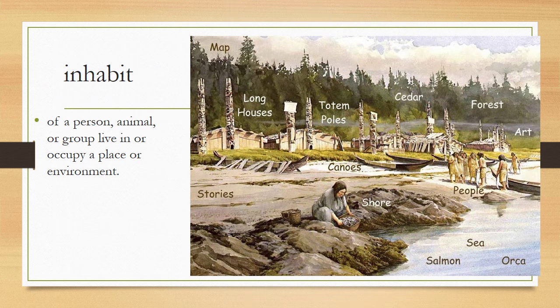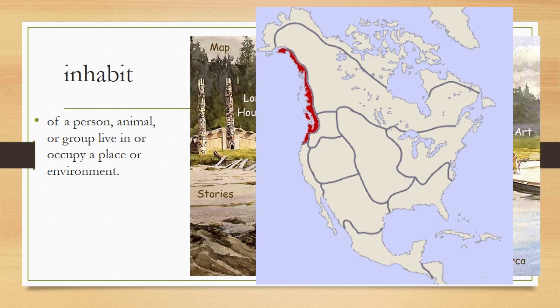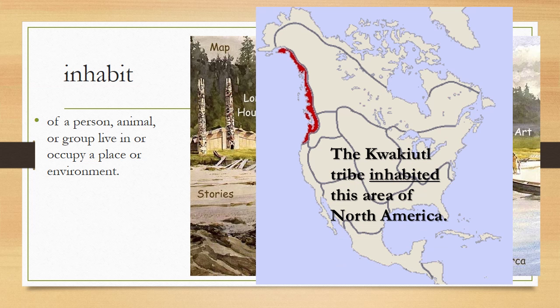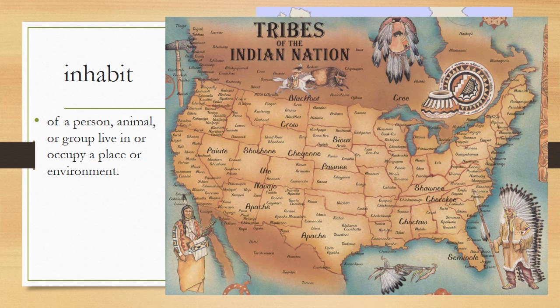Finally, your last word is inhabit. Inhabit can mean a person, an animal, or a group can inhabit — it is another word for live in or occupy a place or environment. Right there you can see the Kwakwaka'wakw people and their settlement, how they inhabit that piece of land. On this map you can see where the Kwakwaka'wakw people settled in red along the North American Pacific Rim — the tribe inhabited this area of North America. Here is a map of many of the tribes of the Indian nation all over North America, and where they inhabited before English settlement.